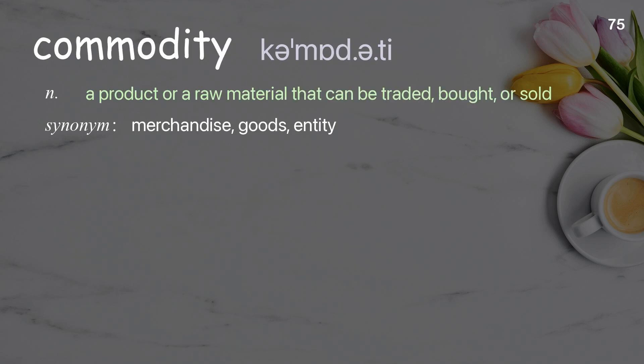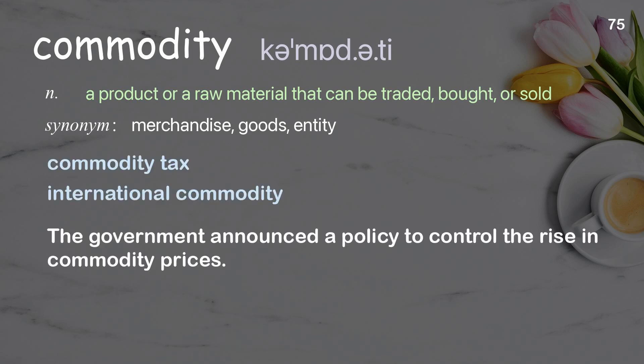Commodity: a product or a raw material that can be traded, bought, or sold. Examples: commodity tax, international commodity. The government announced a policy to control the rise in commodity prices.